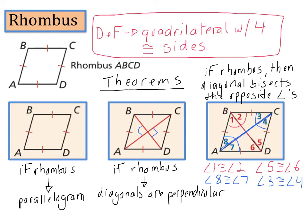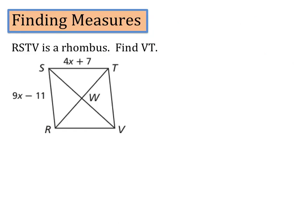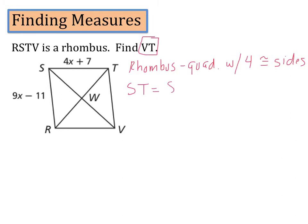Those are our three theorems about rhombuses. Now let's use the properties of rhombuses to find these measures. The first measure we're going to find is VT. Since a rhombus has four congruent sides, ST must equal SR. We know ST is 4x plus 7, and SR is 9x minus 11. Using algebra: 18 equals 5x, so x equals 3.6.